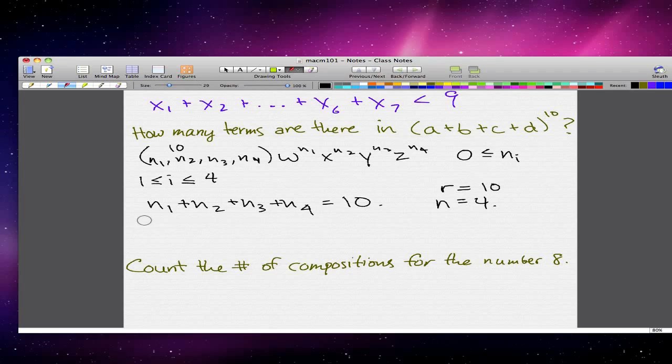And that's as easy as it gets. We use the formula, which is C(4 plus 10 minus 1) choose 10. There are 284 ways. So there are 284 terms, ways or terms.